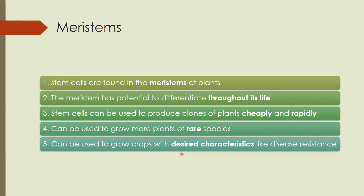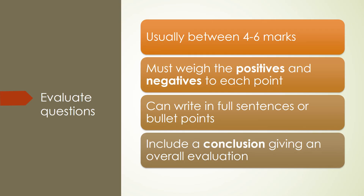You could also have drought resistance and characteristics like that, so learn those two examples as they might come up in a question. This next part is quite important because a lot of teachers tend to miss it out. Exam questions on this topic are usually between four and six marks — sometimes four markers, sometimes six markers.